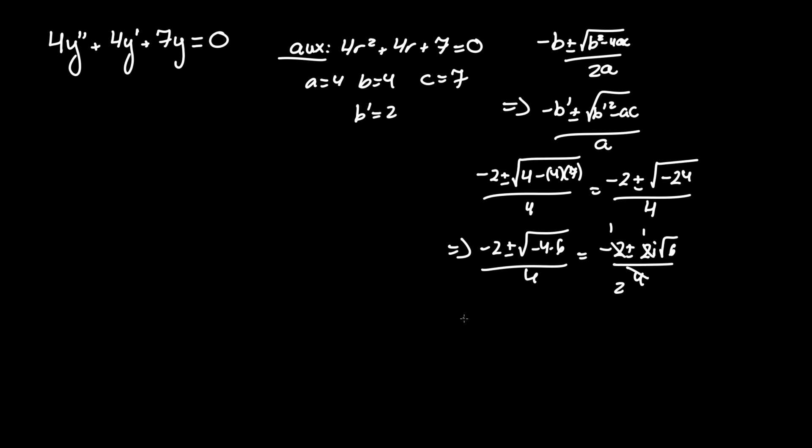And fortunately, we can also cancel out a 2 from all these terms, so it becomes 1, 1, and 2, which leaves us with our root r equal to negative 1 plus minus radical 6 times i over 2.